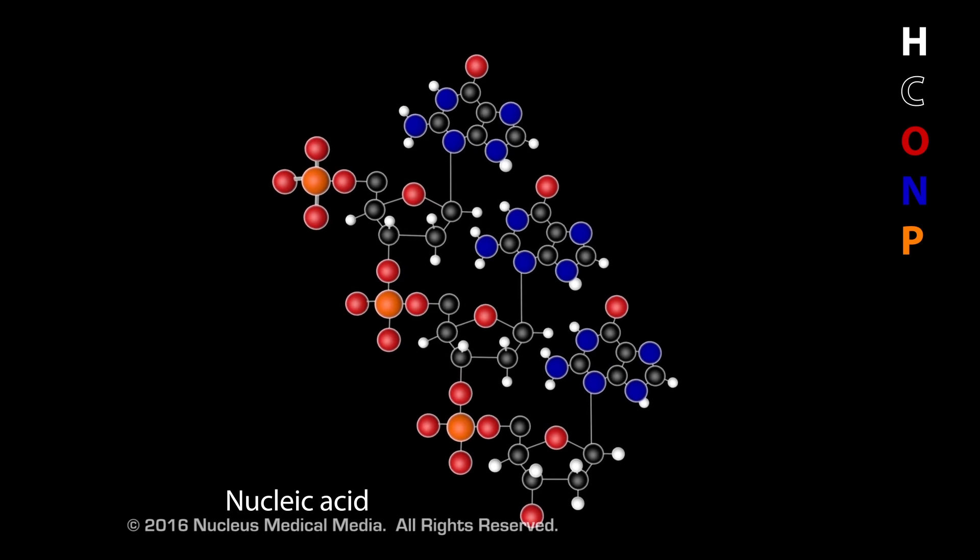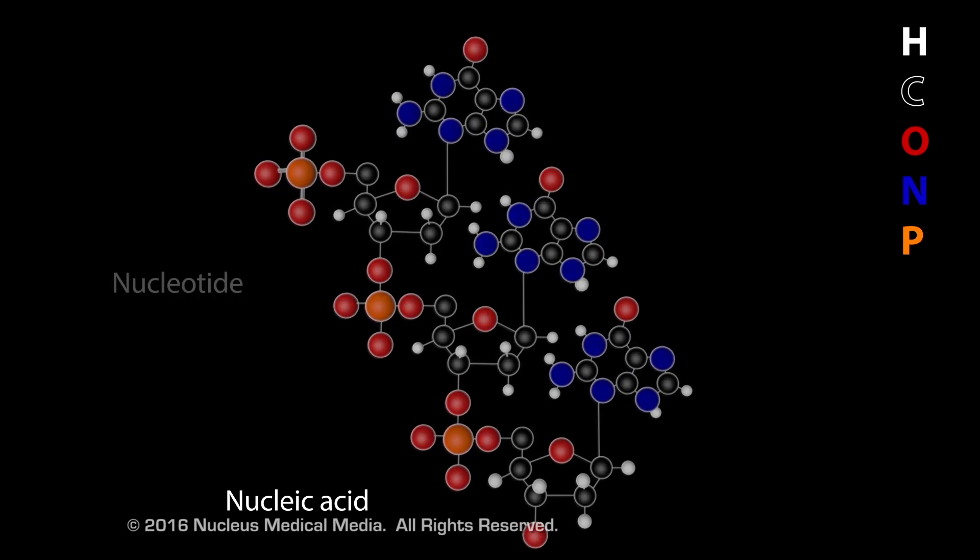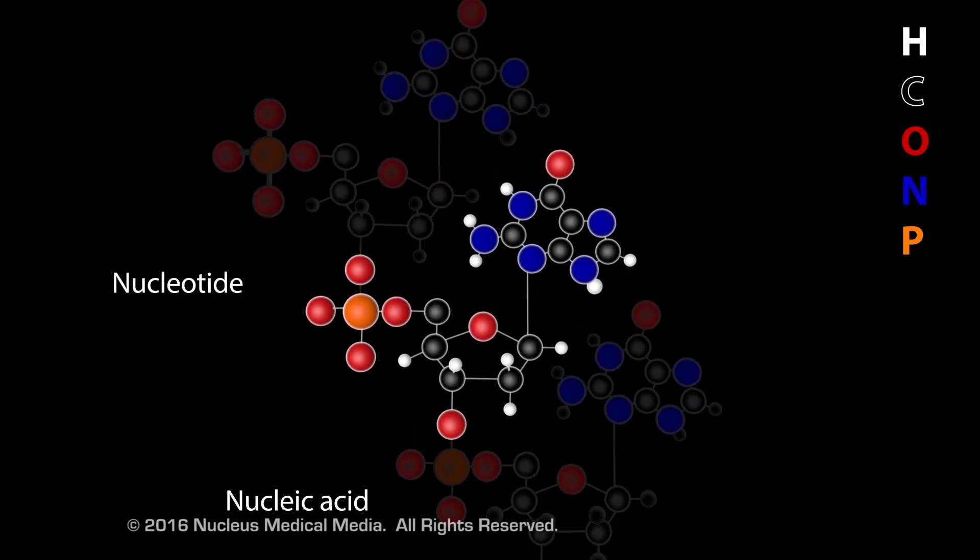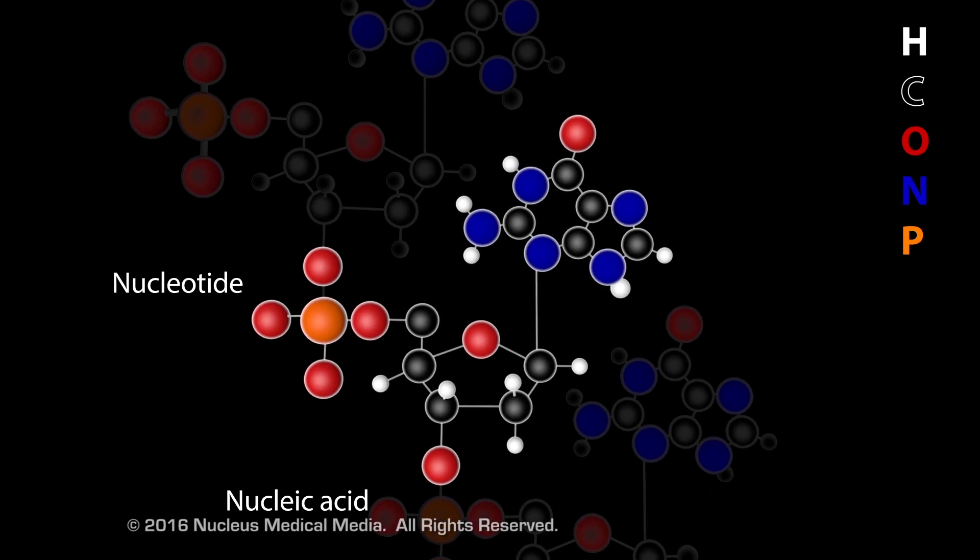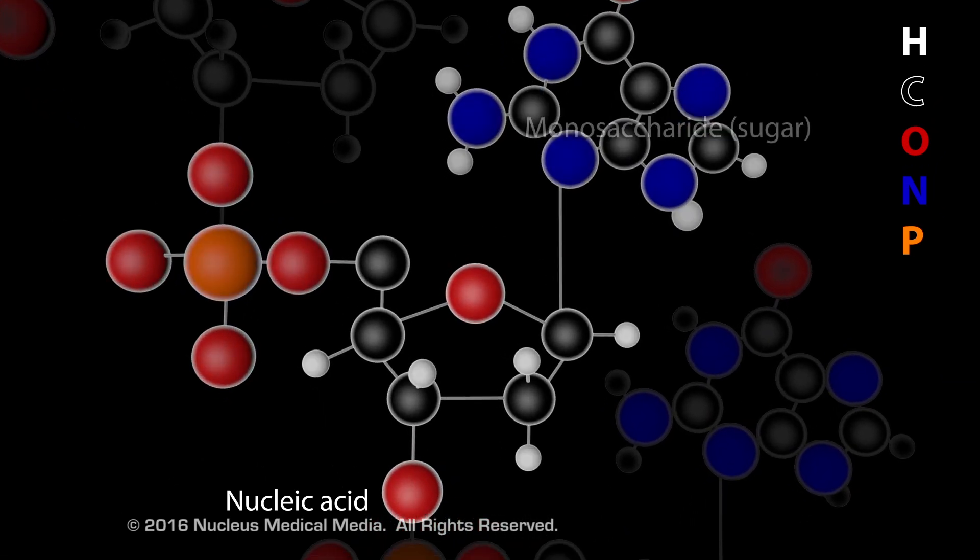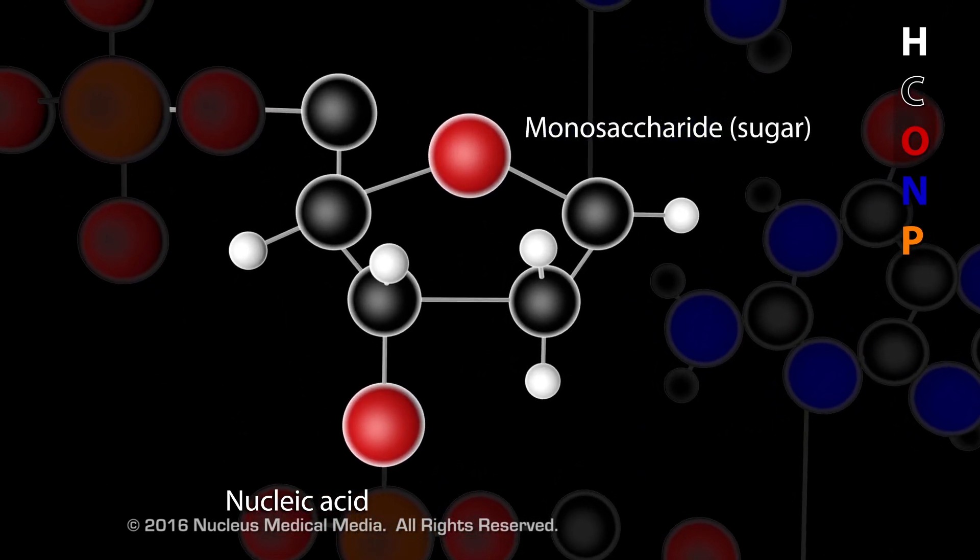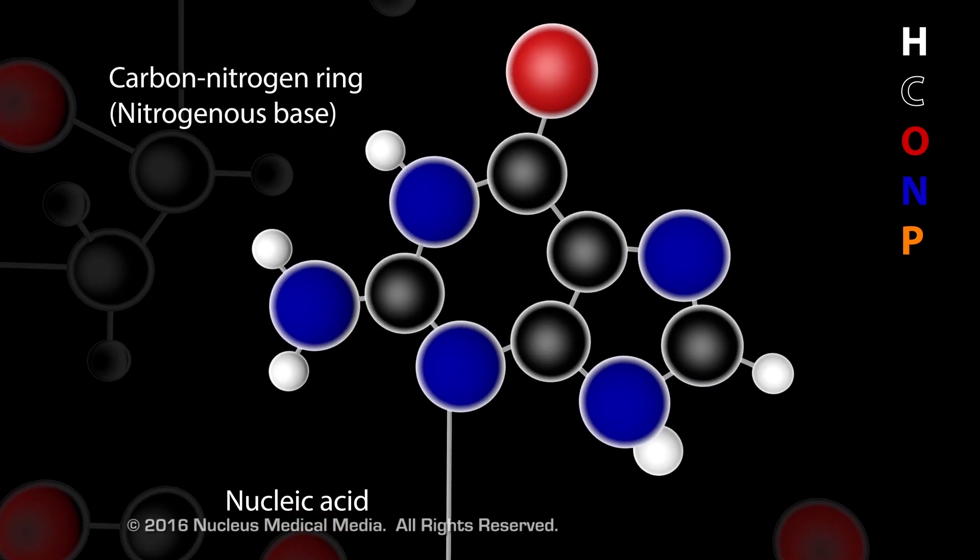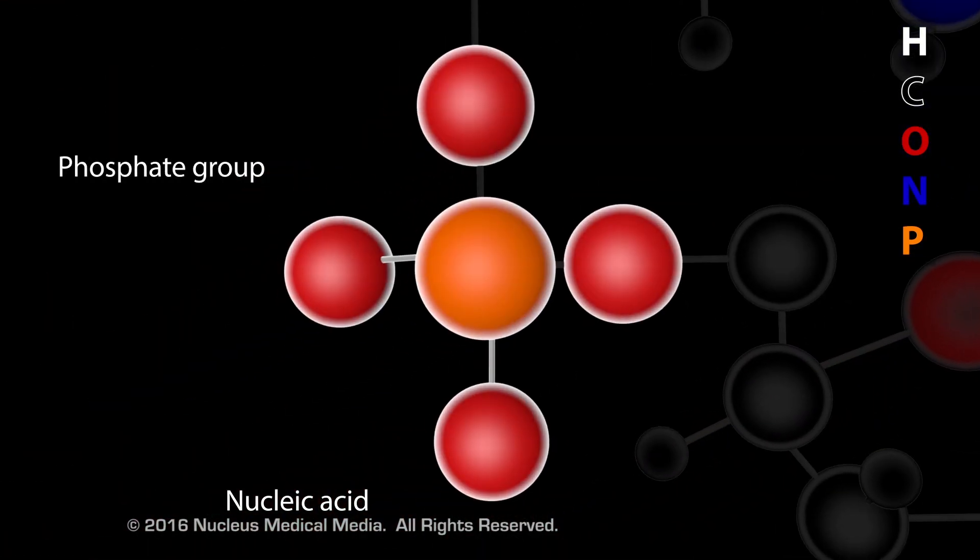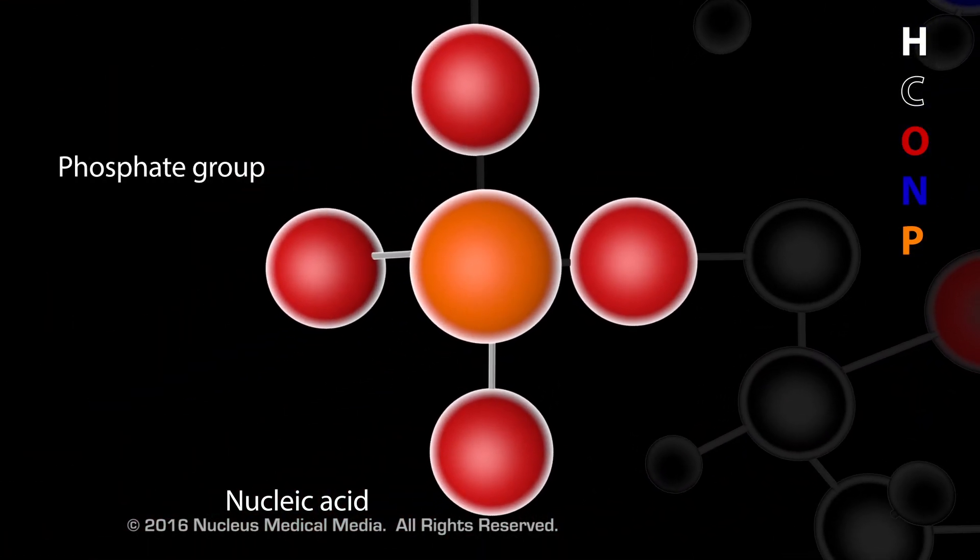Nucleic acids are composed of repeating units called nucleotides. Each nucleotide has three segments: a monosaccharide, a carbon-nitrogen ring, and one or more phosphate groups.